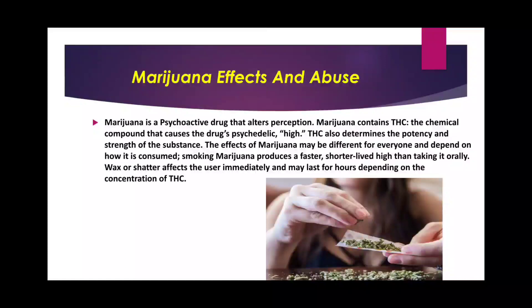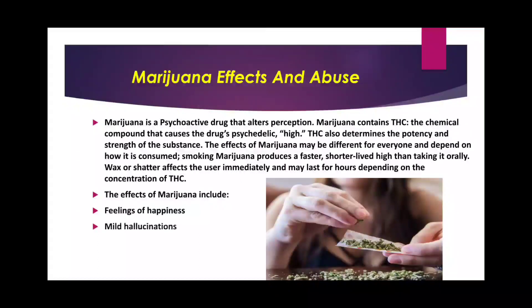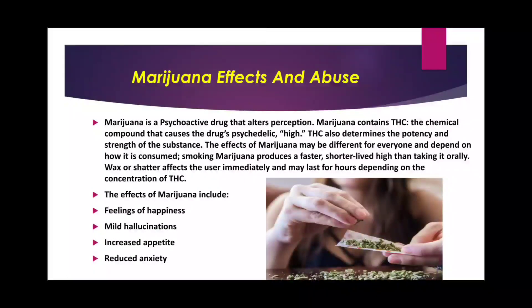Smoking marijuana produces a faster and shorter-lived high than taking it orally. The main effects of marijuana include: feeling of happiness or euphoria, mild hallucinations — seeing or hearing things that do not exist — increased appetite, and reduced anxiety. Some people also experience a bad trip, meaning a scary experience due to hallucinations.